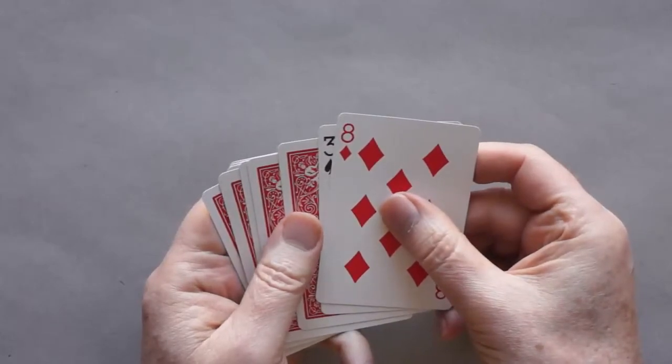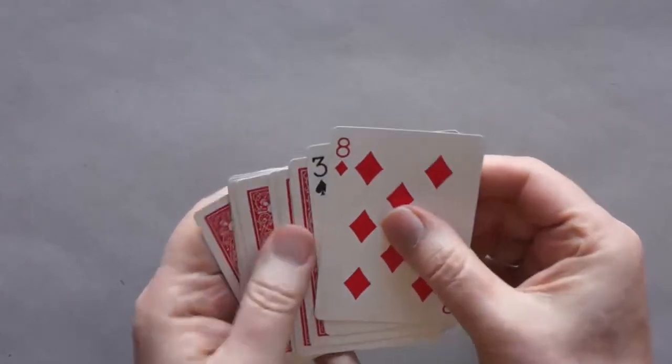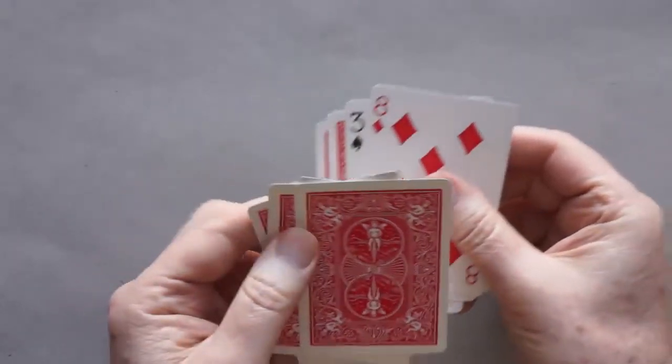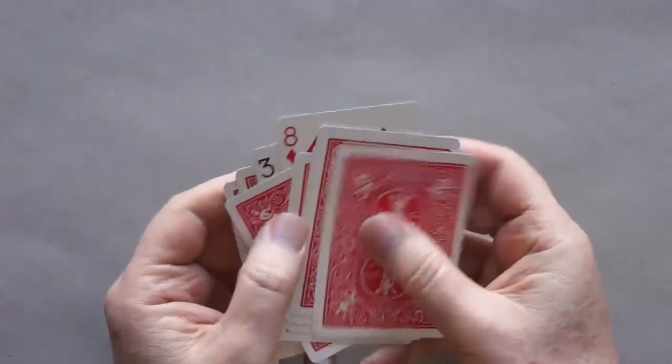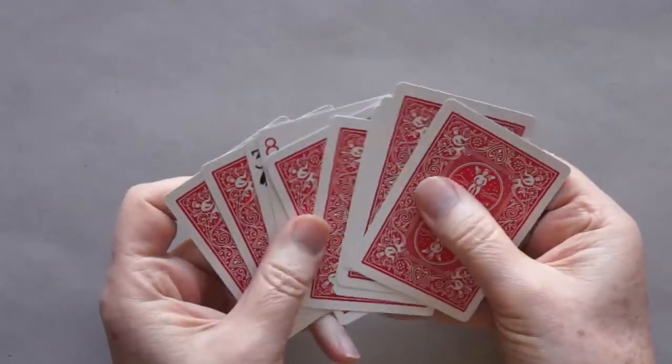So that's the first step. The second step is to cut the packet anywhere. So I'll cut it somewhere in the middle. And that puts those two face-up cards somewhere near the middle.